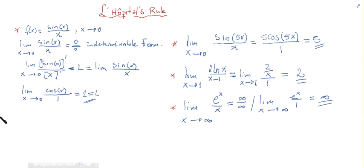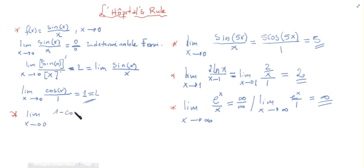In our last example, we'll see that it is sometimes necessary to use L'Hôpital's Rule several times in the same problem, differentiating as many times as needed until a result is obtained. The example is the limit when x tends to 0 of 1 minus cosine of x divided by x squared. Plugging in 0 gives 1 minus 1 over 0, which is 0 over 0 — an indeterminate form.